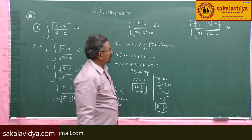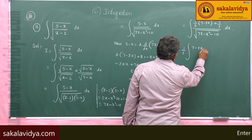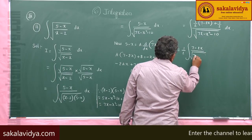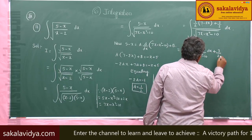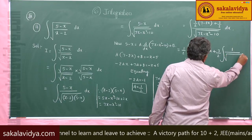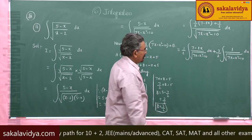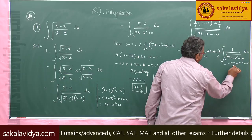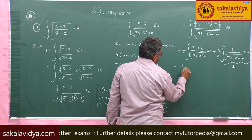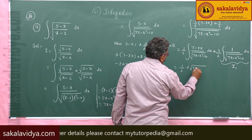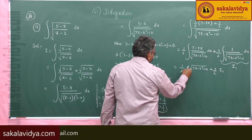Now, let us split into 2 integrals. So, (1 by 2) times integral of (7 minus 2x) by root of (7x minus x squared minus 10) dx, plus (3 by 2) times integral of 1 by root of (7x minus x squared minus 10) dx. The first integral is of the form f'(x) by root f(x), giving 2 root(x), so it becomes root of (7x minus x squared minus 10), plus (3 by 2) I1.